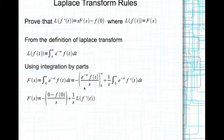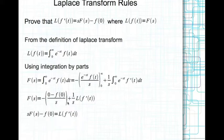Now this part here, if we evaluate at 0, this becomes 1 and this becomes f of 0. At infinity, this becomes 0, so the whole thing drops off. This is evaluated at infinity and this is the expression evaluated at 0. Multiply throughout by s and then you have the Laplace transform of f dash of t is s times capital F of s minus f evaluated at t equal to 0.